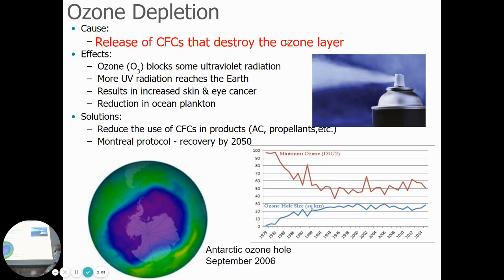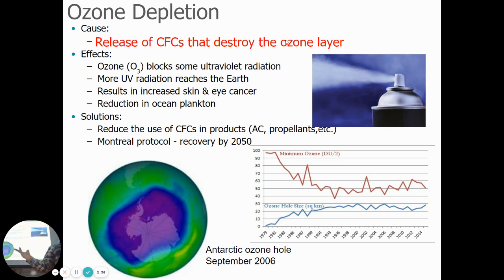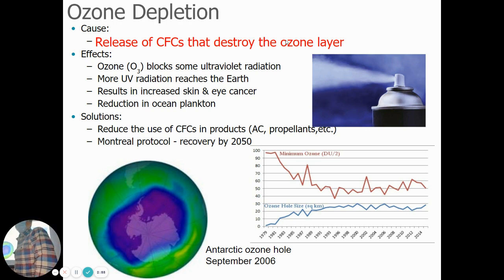So why is it good that it absorbs ultraviolet radiation? Ultraviolet radiation is what can give us a sunburn, and if you get repeated sunburns you increase the risk of skin cancer. Excess ultraviolet radiation can increase the risk of skin cancer in humans, but it can also affect other organisms — it can kill plankton in the oceans. So this layer of ozone gas helps protect us like a shield from this radiation constantly coming from the sun.